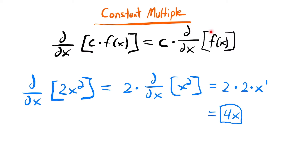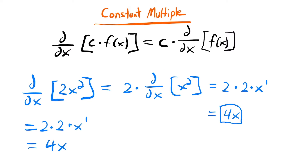While it's nice to know this rule, it's actually not used as explicitly in practice. When we take a derivative requiring a power rule, because the constant is just going to be multiplied by the derivative anyway, we don't bother to pull it out. We just go directly from the expression to the result — 2 times 2 times x to the 2 minus 1 power — and still get 4x. It's still important to understand why we can skip that step.